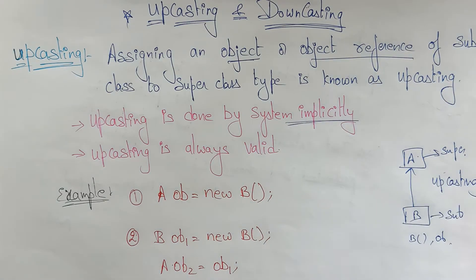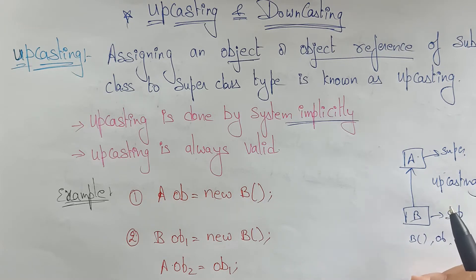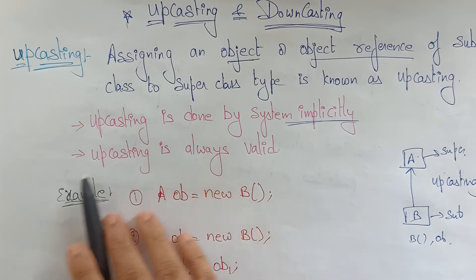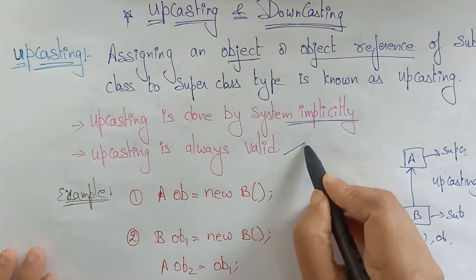Upcasting is done by the system implicitly, so you are not supposed to do anything. The user is not doing anything. In the subclass, we declare the main, create an object and object reference, and with the help of that, we access the superclass methods and variables. Everything is done by the system implicitly, and upcasting is always valid.